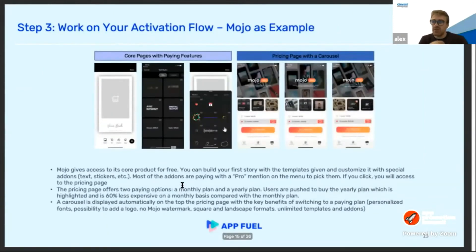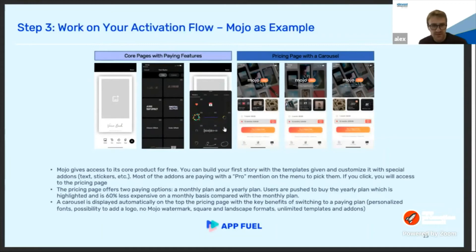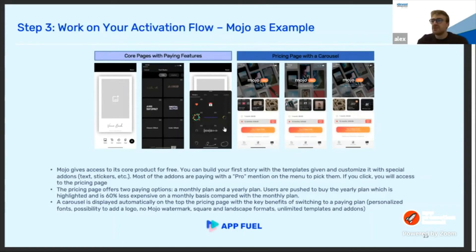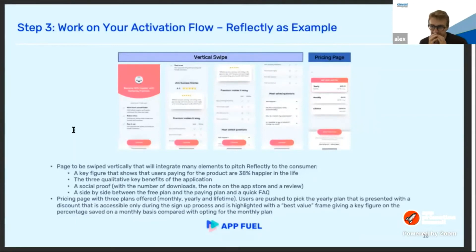The second example is Mojo. What's interesting is that all the core pages of the product — where you're building your story — push you to become a paying customer. Most effects are only included in the Pro plan. When you're building your story and want to add a nice effect, you click on it and get redirected to the pricing page. Another thing I like is the carousel scrolling in the background, showcasing the main benefits while the user is deciding whether to purchase the subscription.